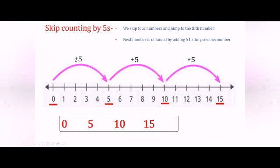Children, as you can see, we are getting the next number by adding 5 to the previous number. Like 0 plus 5 is 5, 5 plus 5 is 10, 10 plus 5 is 15, and so on.